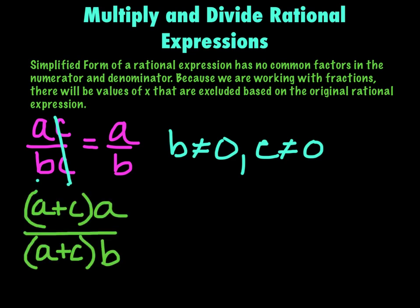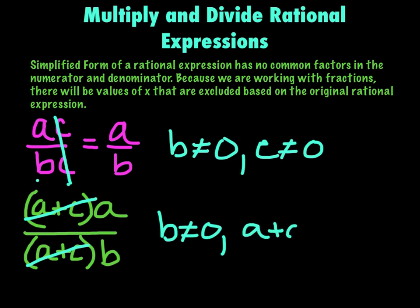Or if we had something like (a+c) times a over (a+c) times b, you can cancel out entire groups, because the opposite of multiplication is division, and if I'm dividing something by itself, it equals one. This is valid as long as b is not zero, and as long as a plus c is not zero — even though we crossed it out, it still has to be that a plus c is not zero.